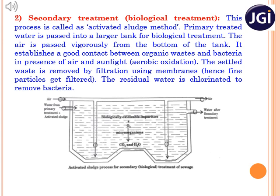By passing air, a good contact between organic waste and microorganisms is established in the tank, resulting in aerobic oxidation of the waste. The settled waste is removed by filtering through a membrane, which filters finer particles. The remaining water is treated with chlorine to remove bacteria. Since this step involves use of microorganisms, it is also called biological treatment.